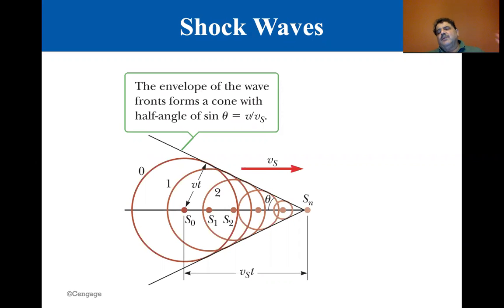Now, what happens when the source exceeds the speed of sound? We can see the envelope of the wave fronts forms a cone with a half angle of sin θ equal to V divided by V sub S. Now V sub S is the velocity of the source divided by the velocity of sound, which is known as the Mach number.